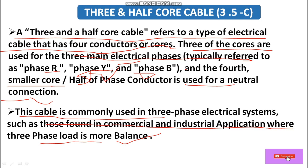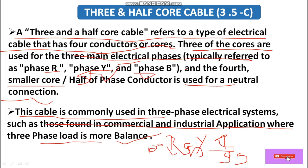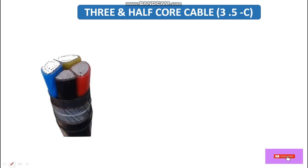A condition applies for this cable: the three-phase load must be balanced across all phases. For example, suppose R has 100 watts, Y has 95 watts, and B has 95 watts — these phases are fairly balanced. In that case we can use the three and half core cable, because not much current will flow through the neutral due to load balance.